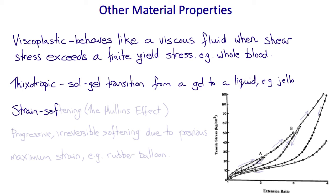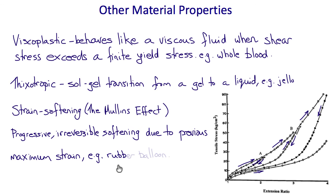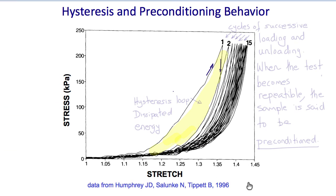Strain softening, or the Mullins effect, is a property that's common to many polymer materials, including many biological tissues. This is a property where a material is permanently softened or softened for a long time after it reaches a new previously unexperienced maximum load. So progressive, irreversible or nearly irreversible softening occurs, and an example of this is a rubber balloon, which the first time you blow it up is much harder than the second and subsequent times.